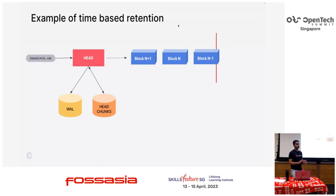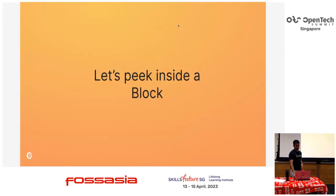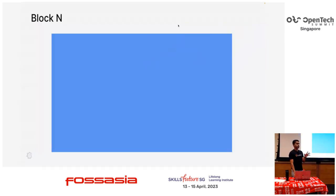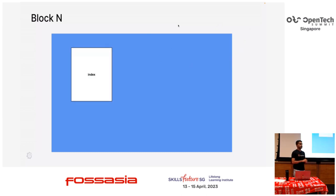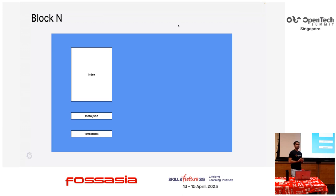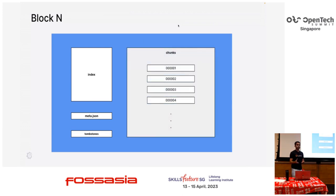This is at a high level how TSDB works. Let's dive a little deeper into a block. Inside the persistent block, which is created out of a head block, it contains an index which maps all the data present in the block. It has a meta telling all the important information about the block. There are tombstones for deletions — we'll come to why we need tombstones and why we can't delete data from a block immediately. And there are the chunks themselves — we store all the chunks together in a bunch of files, all the compressed samples.